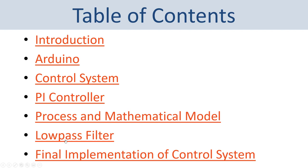Finally I will also implement a low pass filter. When you are only using the mathematical model you typically don't need a low pass filter, but when we are applying the real process we typically need a low pass filter in order to remove noise from the system. Then I will show the final implementation of this control system where I control the given process — actually the mathematical model — using the PI controller, and this low pass filter will also be used to remove noise from the system.